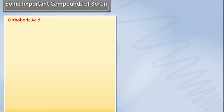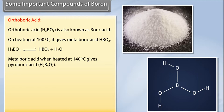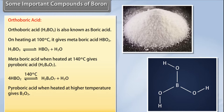Orthoboric acid (H₃BO₃) is also known as boric acid. On heating at 100°C, it gives metaboric acid (HBO₂). Metaboric acid, when heated at 140°C, gives pyroboric acid (H₂B₄O₇), which when heated at high temperature gives B₂O₃.